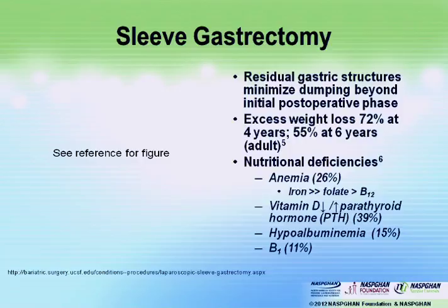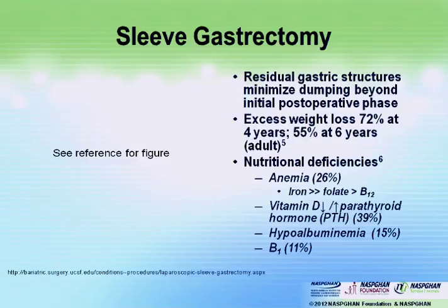With the sleeve, this is a more permanent type of restriction of the stomach — actually part of the Roux-en-Y. You have a more fixed amount of restriction, so weight loss would be expected to be better: about 72% at four years and 55% at six years in adults. The reason it may be a little less further out is that the sleeve accommodates to the patient. Deficiencies associated with the sleeve include anemia, most prominently iron, followed by folate, followed by B12.